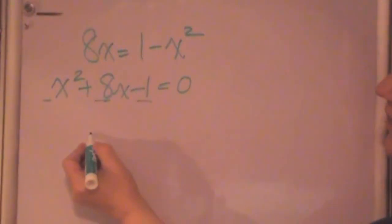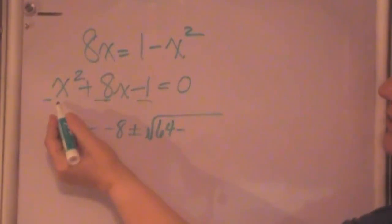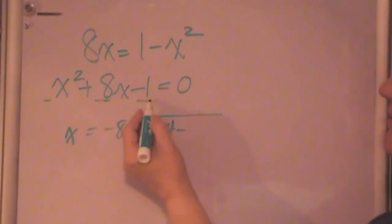So we have x equal to minus B, minus 8, plus or minus the square root of B squared, minus 4 times A, which is 4, times C, which is negative 4. So I'm subtracting a negative 4, which means I'm adding a positive 4, all over 2a, which is 2.